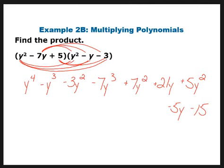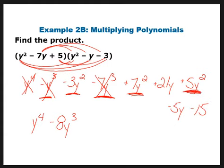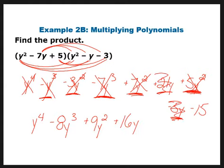You can see how this process becomes a little bit long and drawn out. Now combine like terms: there's only one y⁴, so that stays. Looking for y³: negative y³ and negative 7y³ add together to give negative 8y³. For y²: negative 3y² plus 7y² plus 5y² gives plus 9y². Then 21y plus negative 5y is plus 16y. And then minus 15. So you end up with a quartic polynomial, with the highest power being 4.